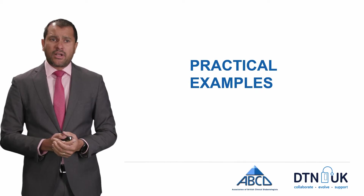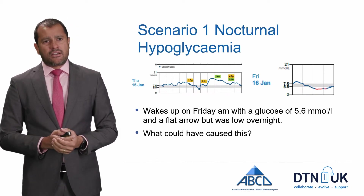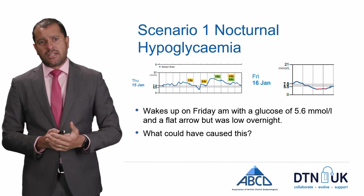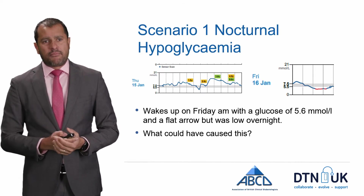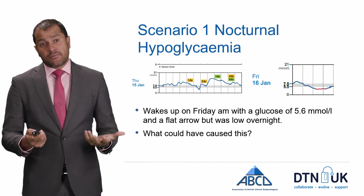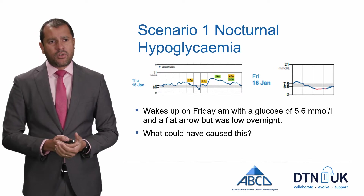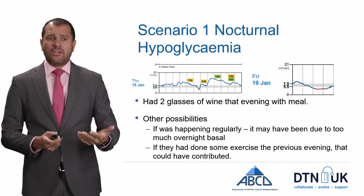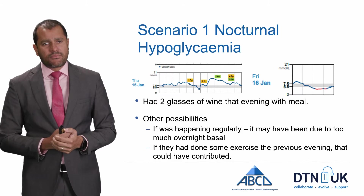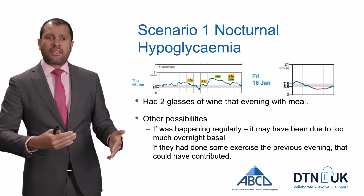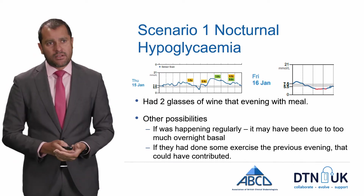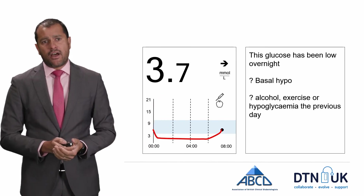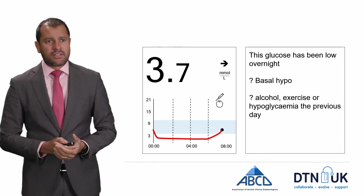Here's a practical example: on Thursday the patient had a hypo in the afternoon and then went to bed. Overnight the glucose dipped down and was pretty flat. What could have caused this? The person had had a couple of glasses of wine that evening with their meal. If this was happening regularly you might want to reduce the overnight background insulin. Similarly, if they'd done some exercise the previous evening, you might want to drop the basal on nights after exercise.